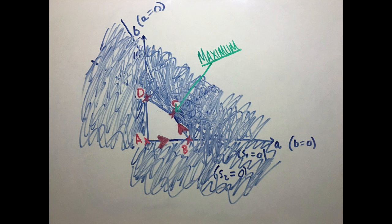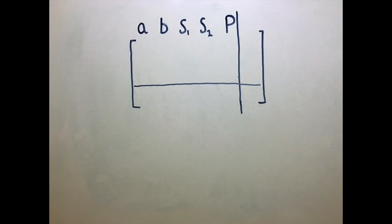We start by setting up what's called an initial tableau. In the tableau, there's a column for each variable, and a row for each equation. We have three equations, so let's fill in the values for each one of those.